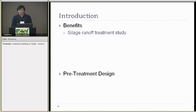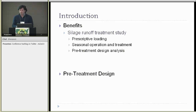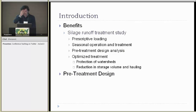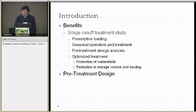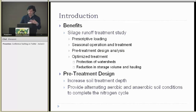The benefits of my treatment study are prescriptive siting. I'm looking at design storms and how filter strips are able to reduce pollutants, looking at this over seasonal operation. We're also looking at a pre-treatment design analysis to facilitate nitrogen removal. All of these can lead to optimized treatment, helping protect the watershed and, for the producer, reducing storage volume — potentially treating a first flush and reducing transportation costs with hauling and spreading. The pre-treatment design will increase the soil treatment depth and provide alternating aerobic and anaerobic soil conditions to give different environmental conditions for microbes to complete the nitrogen cycle.